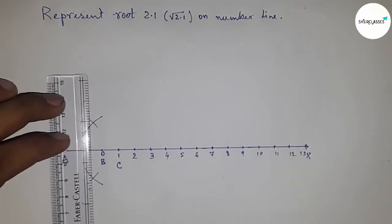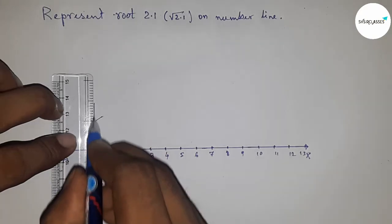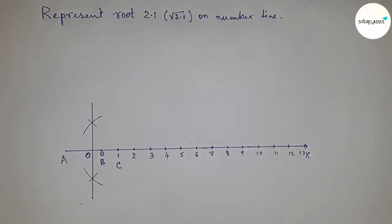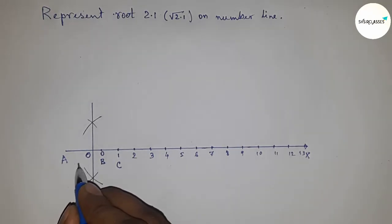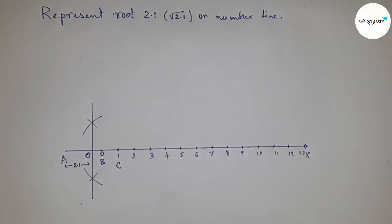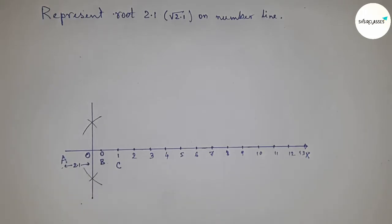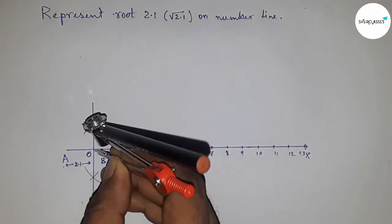Draw and join this which bisects at a point O. This is AB equals 2.1 centimeters. Now we need to construct a semicircle.